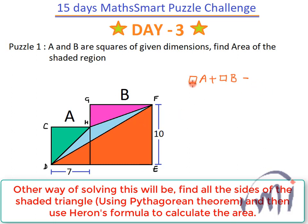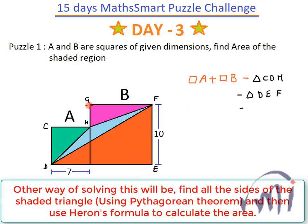So it will be the sum of the areas of square A and square B, minus the area of triangle CDH (this triangle), minus the area of triangle DEF (this triangle), minus the area of triangle GHF (this triangle).